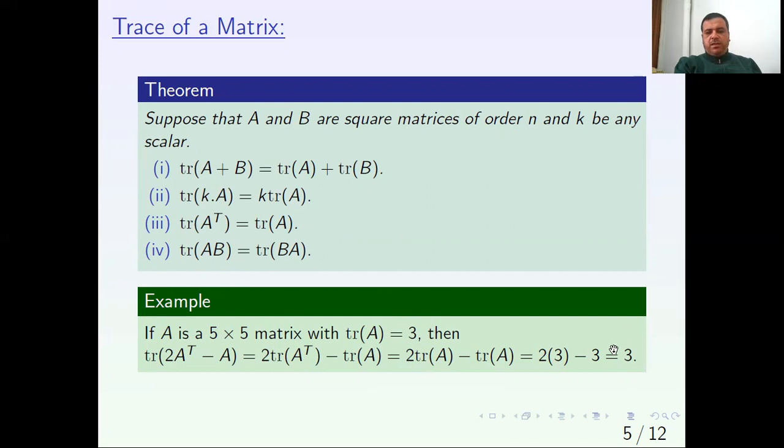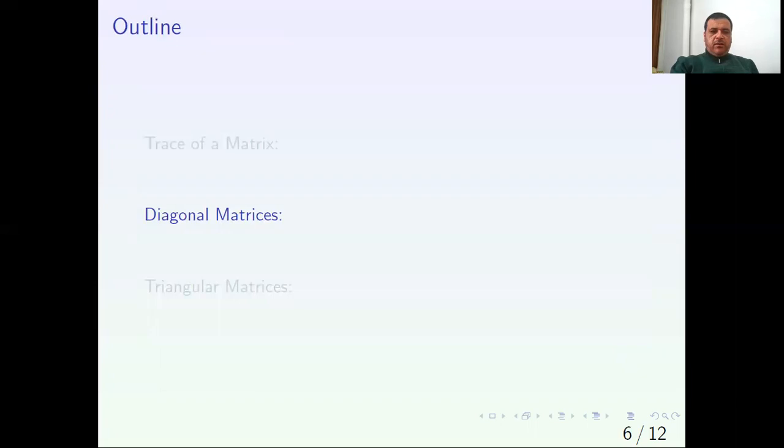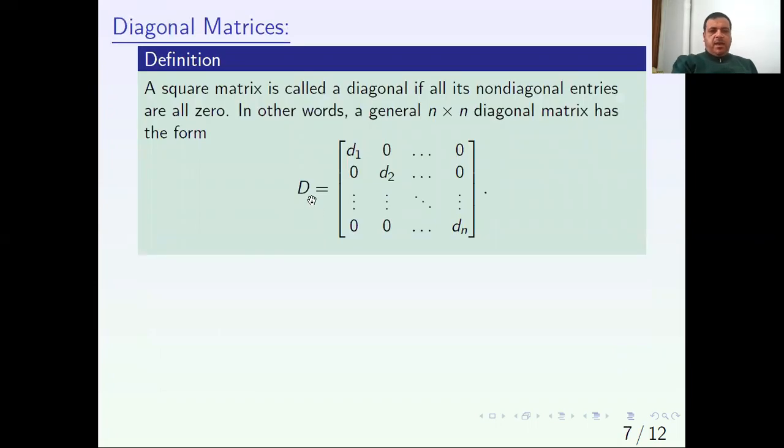A square matrix is called a diagonal if all of its non-diagonal entries are all zero. In other words, a general n by n diagonal matrix has this form.